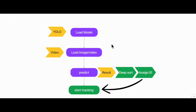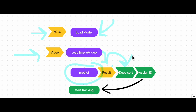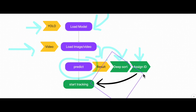Let us look at the basic structure of our object tracking code model. Overall there are four basic steps involved. First, we load our model — in our case it is the YOLO model, though you can use a custom model trained on custom data. Then we load our video. Once model and video are loaded, we predict on each frame and store results. Those stored results are passed into our DeepSORT algorithm, which assigns a unique ID to each predicted object in a given frame. We then start tracking each ID.